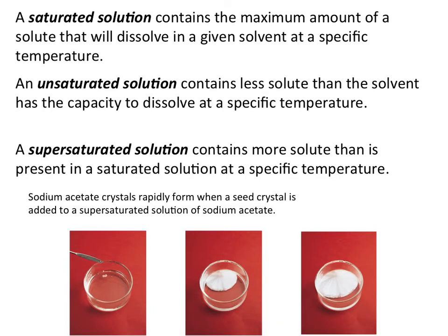Solutions are described in three ways: saturated, unsaturated, or supersaturated. A saturated solution contains the maximum amount of solute dissolved in a specific quantity of solvent at a specific temperature. An unsaturated solution contains less solute than that specific quantity of solvent at that temperature has the capacity to dissolve. In an unsaturated solution, you can continue to add solute and it will continue to dissolve until it reaches the point of saturation.